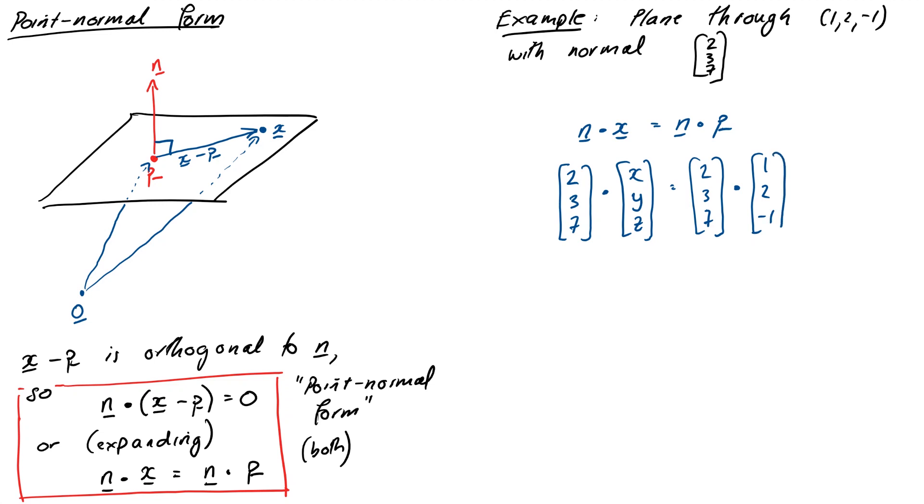So we get (2, 3, 7) dot (X, Y, Z) is equal to (2, 3, 7) dot (1, 2, -1). Actually doing the dot product gives us an equation 2X plus 3Y plus 7Z is equal to 1. Okay, so this takes us from our point normal equation actually to a slightly more familiar looking one, a general algebraic equation for a plane.